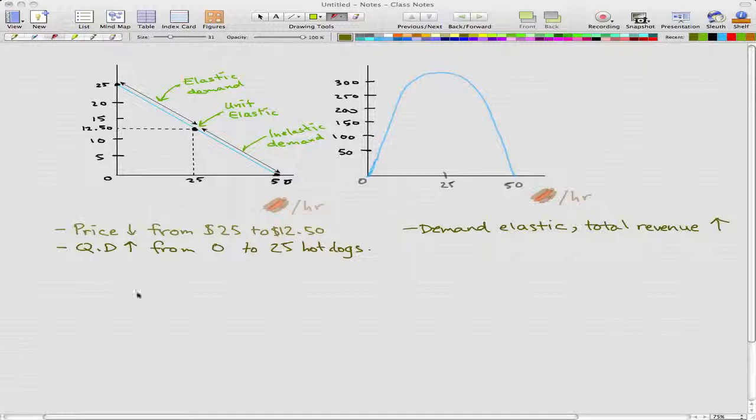We're going to have our price fall from $25 to $12.50 and this will cause the quantity demand to increase from 0 to 25 hot dogs. And with these effects, we found in a couple of past videos that the elasticity is 4.